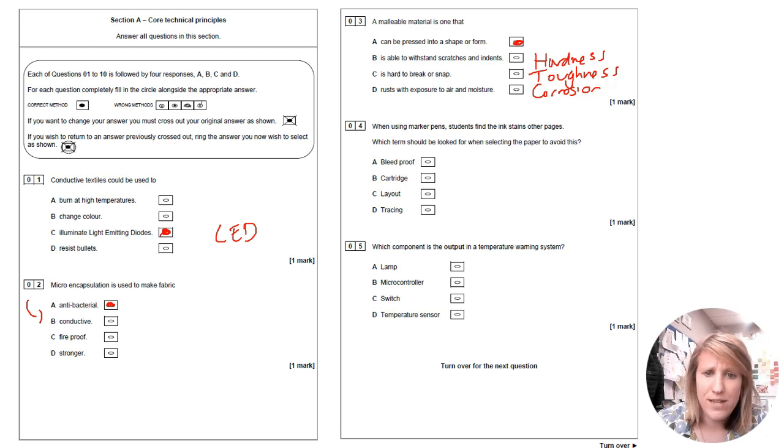When using marker pens, students find the ink stains other pages. Oh, how tragic. You can go through on your tables as well. Which term should be looked for when selecting the paper to avoid this of the most obvious thing in the world? Bleed proof so that the ink does not go through the paper and is kept on the surface so you can buy bleed proof paper for markers that stops that happening. It's expensive. That's why we don't have it.